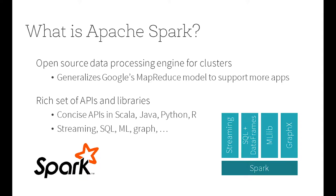So what is Apache Spark? It's basically an open source data processing engine that runs on clusters of machines. It's a generalization of Google's MapReduce model. It has the same kind of characteristics in terms of fault tolerance and things like that, but it can support more types of applications.